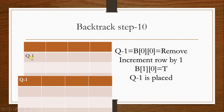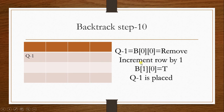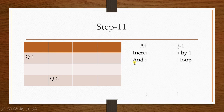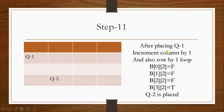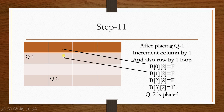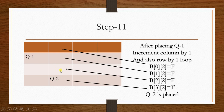Step 10: Q1 must also be removed since backtracking continues, and it is incremented to the next position at [1][0], since [1][0] is also a safe place. Step 11: After placing Q1, column is incremented by 1 and row loops from the start. B[0][2] is unsafe. The next candidate location is also checked, and Q2 is placed at the safe location found.